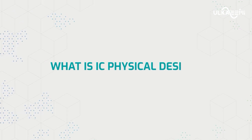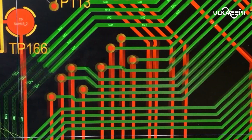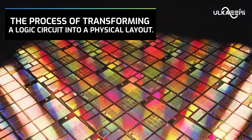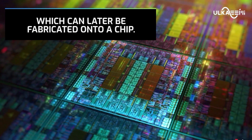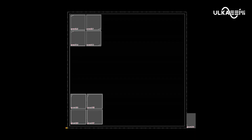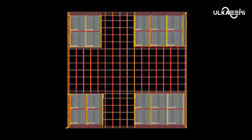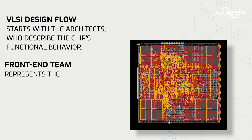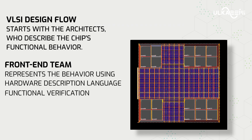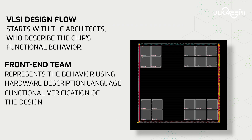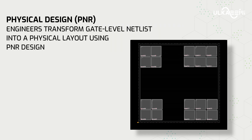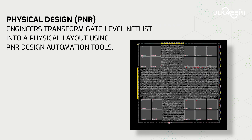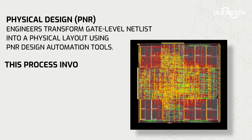Physical design, or P&R, is a process that can transform a logical circuit into a physical layout based upon which the chip can be fabricated. The VLSI design flow of an integrated circuit is initiated by the architecture team working on functional behavior. Then the front-end team represents that functional behavior using hardware description language, followed by functional verification. Then the physical design engineers, or P&R engineers, transform a gate-level netlist into its physical layout using P&R design automation tools.